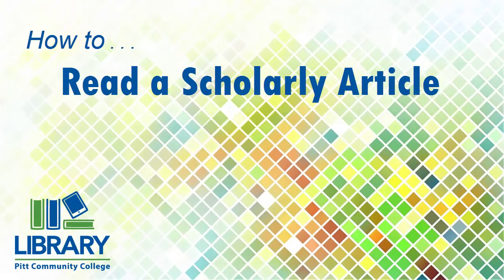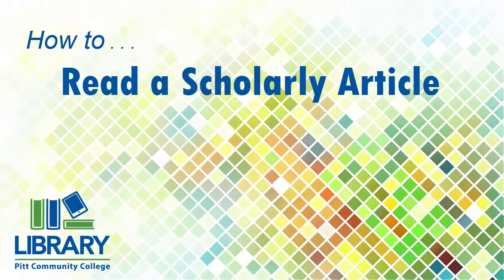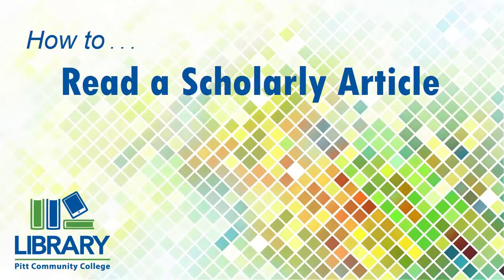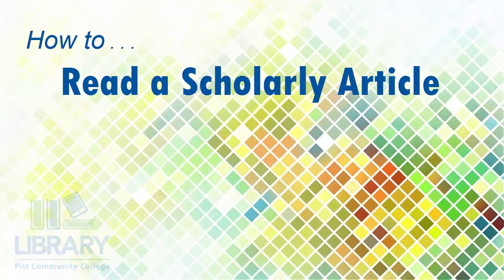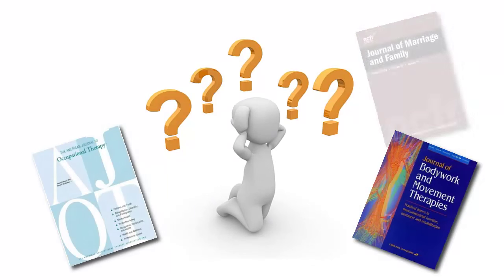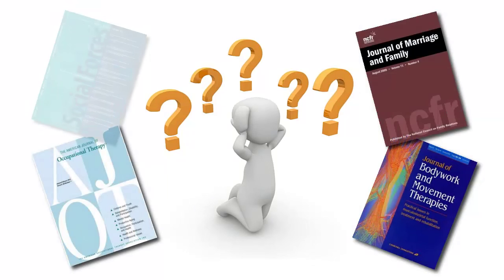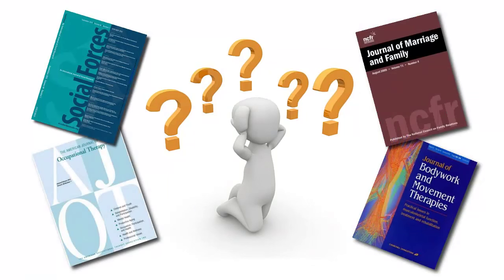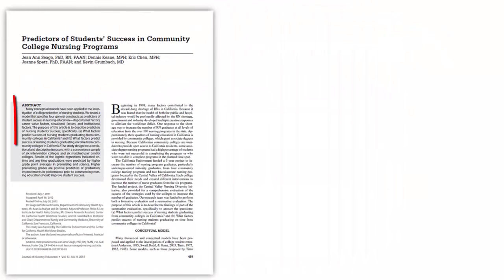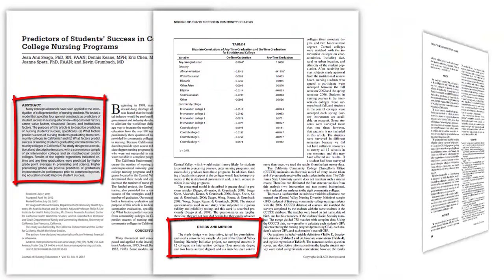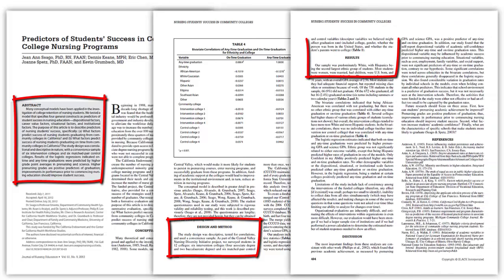How to Read a Scholarly Article. Scholarly articles can be a bit intimidating and confusing to read. Fortunately, this type of article is typically broken down into sections, and knowing a little bit more about these sections will help you better understand the article.